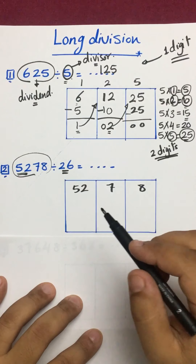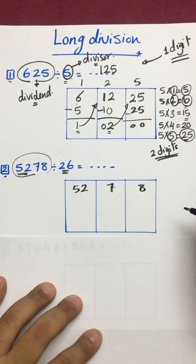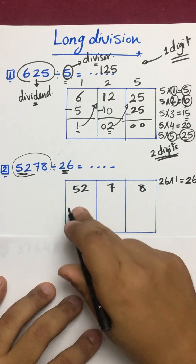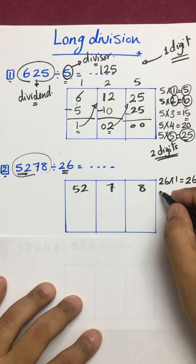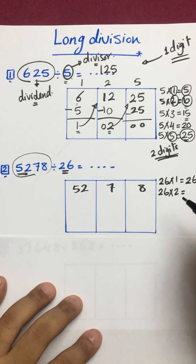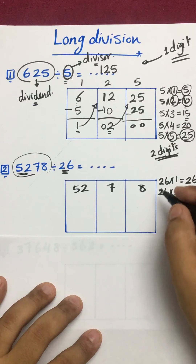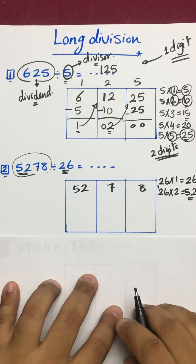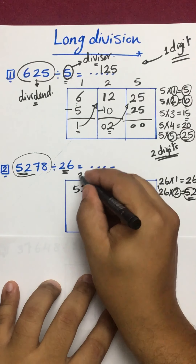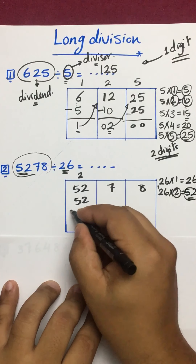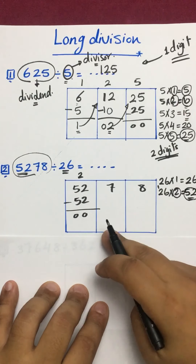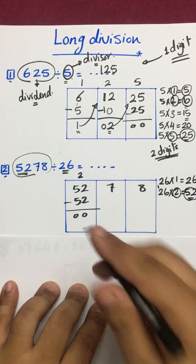26 times 1 equals 26 — not reached. Let's continue: 26 times 2. Starting from units: 2 times 6 is 12, write 2 and carry 1; 2 times 2 is 4, plus 1 is 5. So 26 times 2 equals 52. We get the exact number. We take 52 and 2: 2 is up, 52 is down. Take a line and subtract: 2 minus 2 is 0, 5 minus 5 is 0. Now we move to the second place — we have nothing to carry.